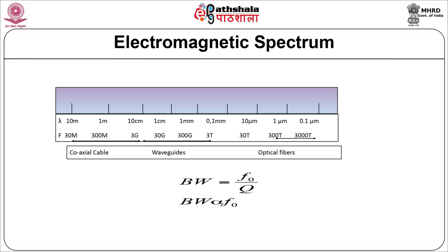The bandwidth requirement is also proportional to the number of users if all of them are using voice information. Therefore, to have reliable communication with a large number of people who can send information from one point to another, we must have a medium which has low loss and large bandwidth. Therefore, one has to design the electrical circuit such that the quality factor of the electric circuit is practically independent of the frequency.